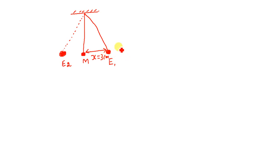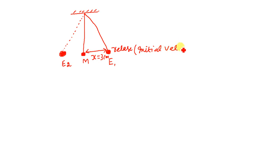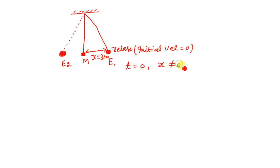I will take the amplitude to be three centimeters. Initially I will release it and not project it, which means the initial velocity is zero. Therefore, at t equal to zero, x is not zero but velocity — which I have written as x1 — will be zero.